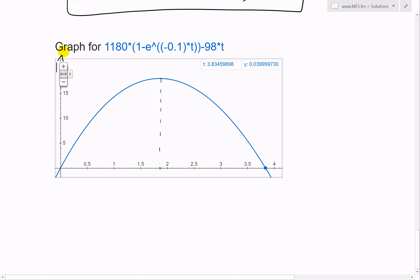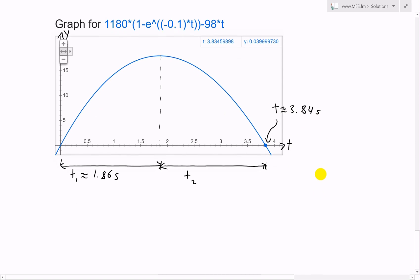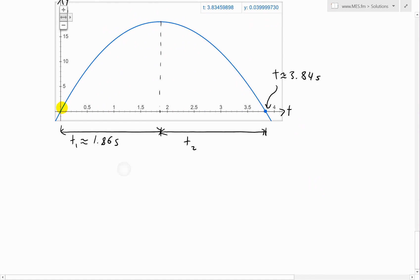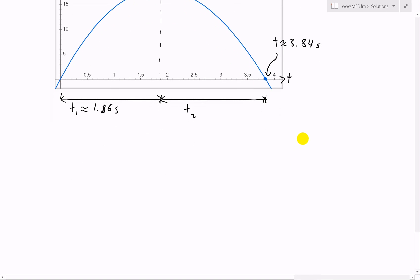This is y, this is the time t. We have from here to here is from our earlier video, t₁, which is roughly 1.86 seconds. What we want to find out is t₂, which is from there all the way to here. At this value right here, the height is almost zero, and we get about 3.84 seconds. That's the full length from here to here, from when you throw it all the way to land again.